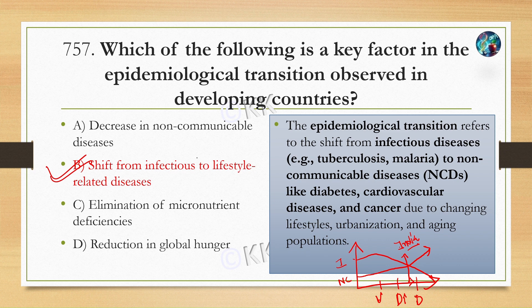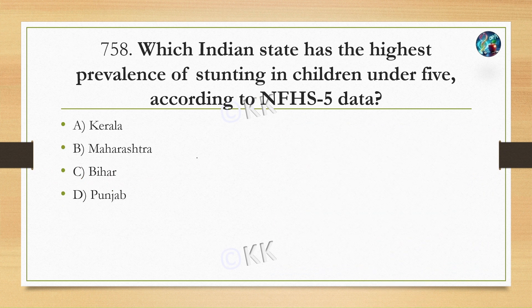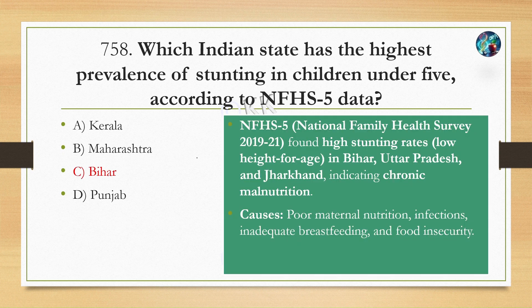Which Indian state has the highest prevalence of stunting in children under five according to NFHS-5 data? Option A: Kerala, Option B: Maharashtra, Option C: Bihar. The correct answer is Option C, Bihar. The 2016-17 Economic Survey mentioned the 'BIMARU' states — Bihar, Madhya Pradesh, Rajasthan, and Uttar Pradesh. Additionally, Jharkhand and other states also show high stunting rates due to poor maternal nutrition, infectious diseases, inadequate breastfeeding, and food insecurity.